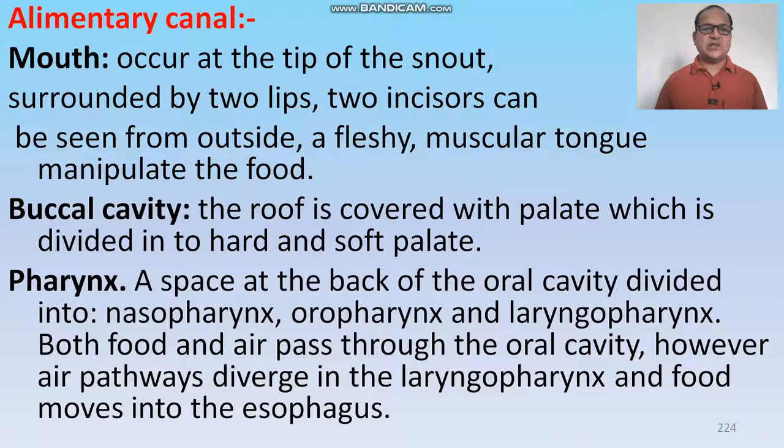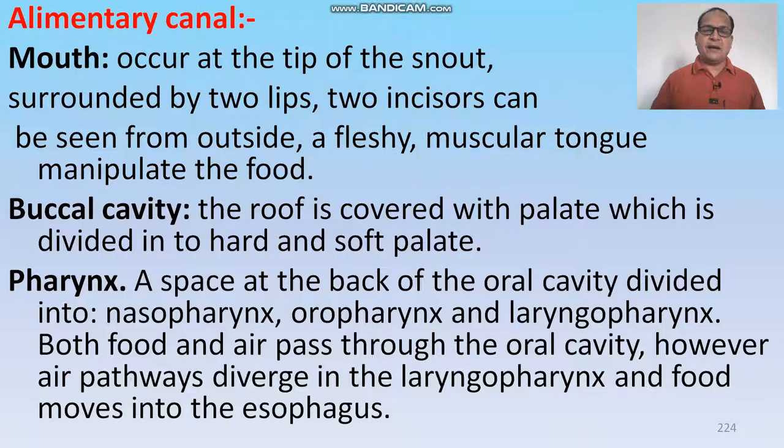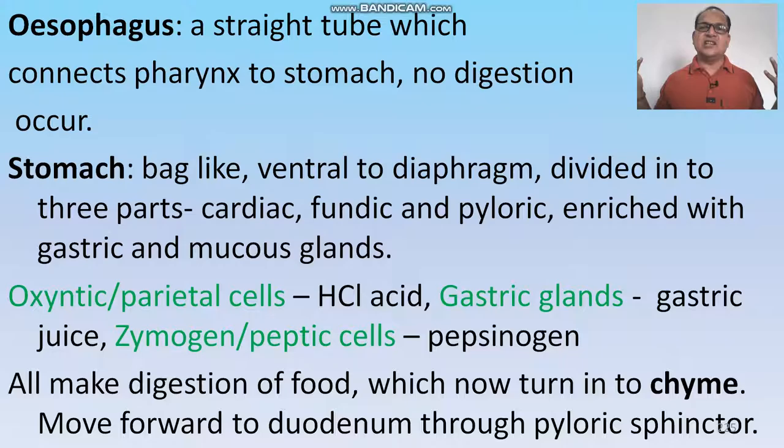The pharynx is a space at the back of the oral cavity, divided into nasopharynx, oropharynx, and laryngopharynx. Both food and air pass through the oral cavity; however, pathways diverge — air moves into the laryngopharynx and food moves into the oesophagus. The oesophagus is a straight tube connecting the pharynx to the stomach; no digestion occurs in the oesophagus.